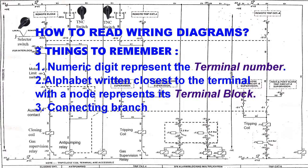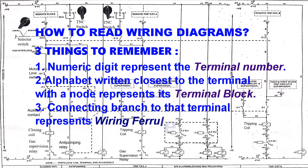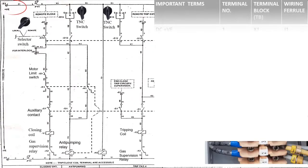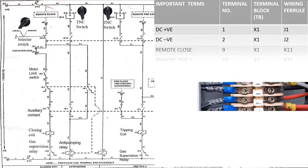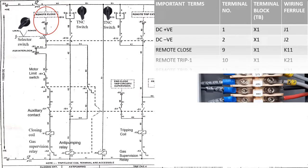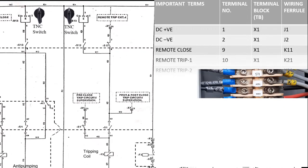From this we can say that DC positive is given at terminal number 1 of TBX1 having wiring ferrule J1, and DC negative on terminal 2 TBX1 wiring ferrule J2. Similarly, remote close on terminal 9 TBX1 wiring ferrule K11, remote trip 1 on terminal 10 TBX1 wiring ferrule K21, remote trip 2 on terminal 11 TBX1 wiring ferrule K31.